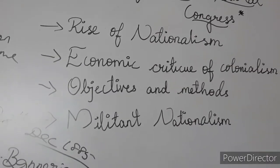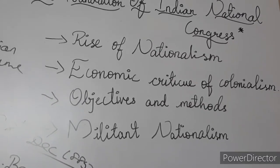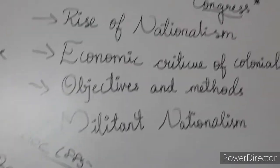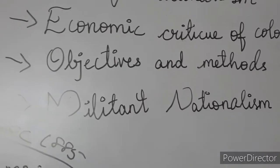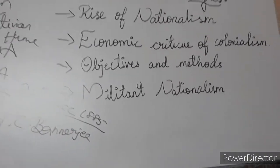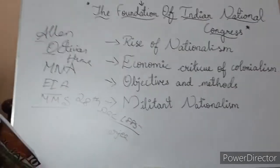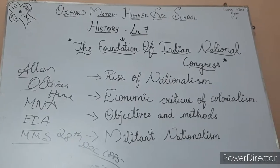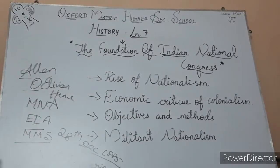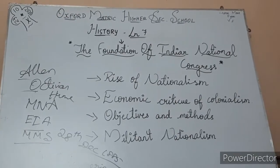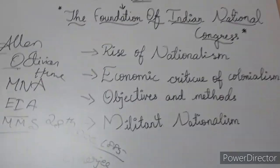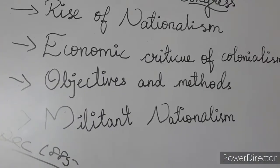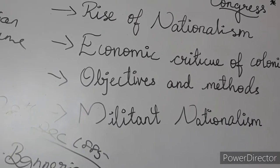The key demands of the Indian National Congress included: creation of Legislative Councils at provincial as well as central level; increasing the number of elected members in the Legislative Council; separating judicial and executive functions; reducing military expenditure; reduction of home charges; extension of trial by jury; holding civil services exams in India as well as in England; police reforms; reconstruction of forest laws; and promotion of Indian industries with an end to unfair tariffs and excise duties.